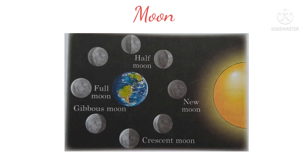This is the diagram of the phases of the moon. The first one is the half moon, the second one is the new moon, the third one is the crescent moon, the fourth one is the gibbous moon, and the fifth one is the full moon.